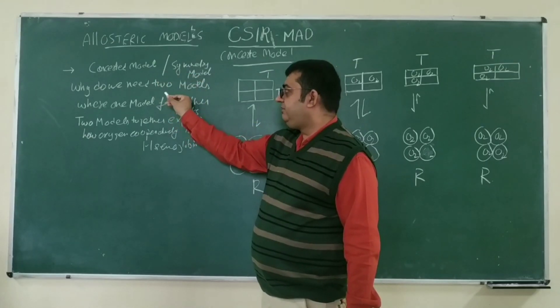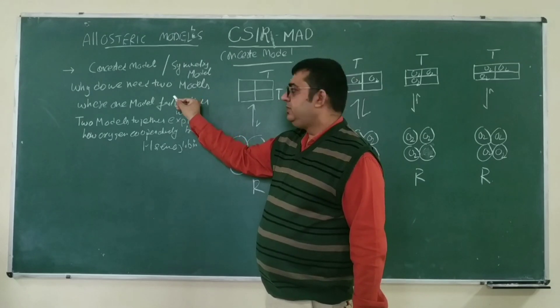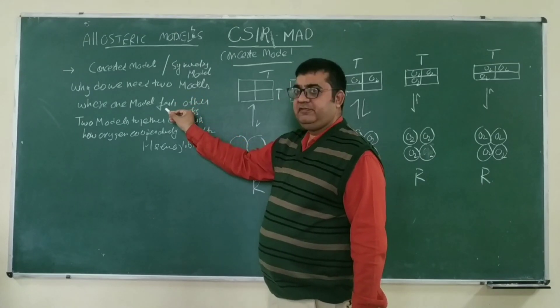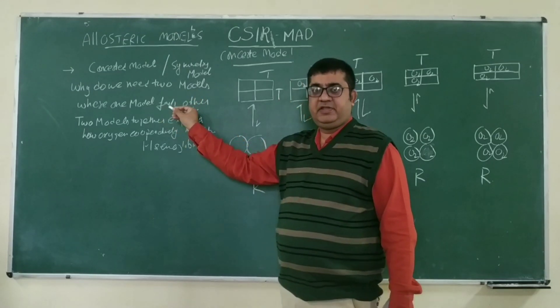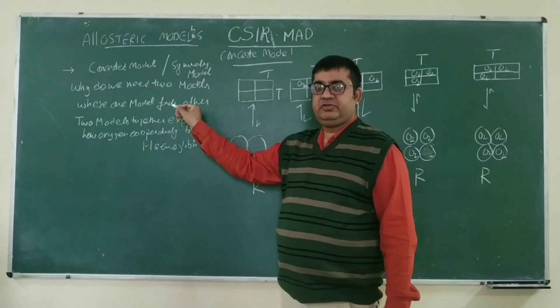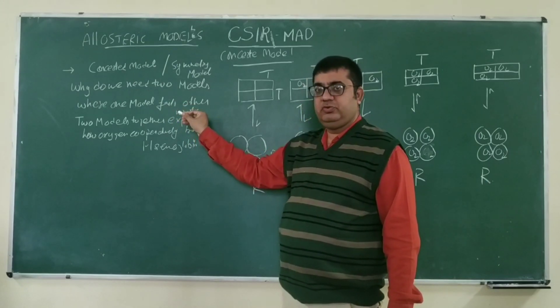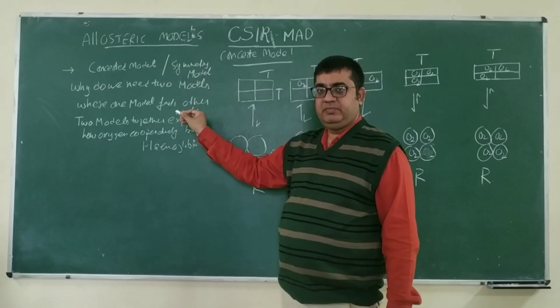Why do we need two models? It's basically because where one model fails, another model works. So we need both models to explain the allosterism phenomenon.